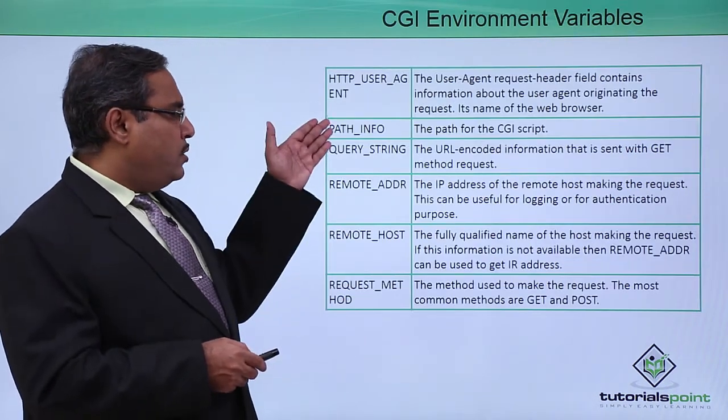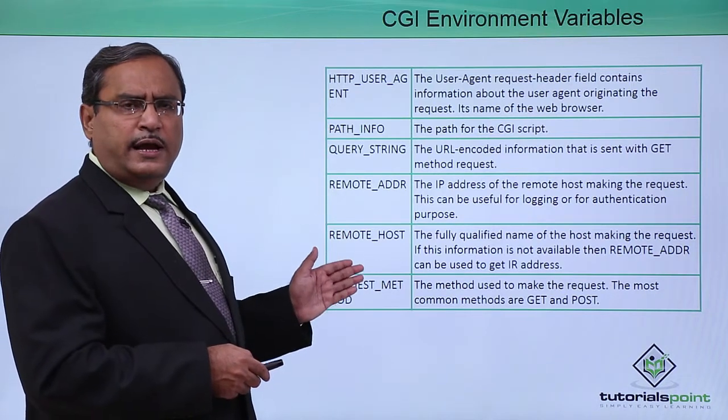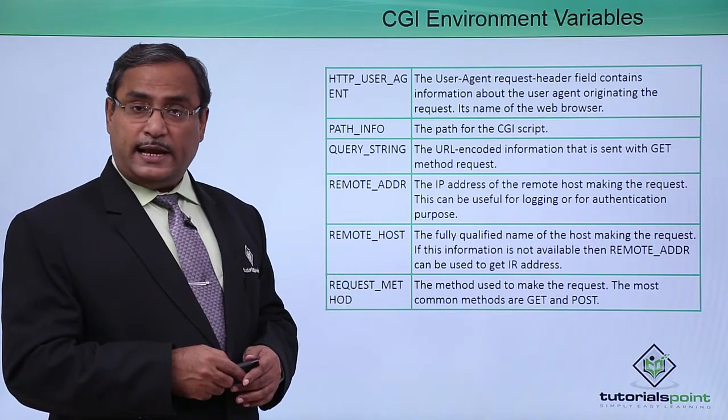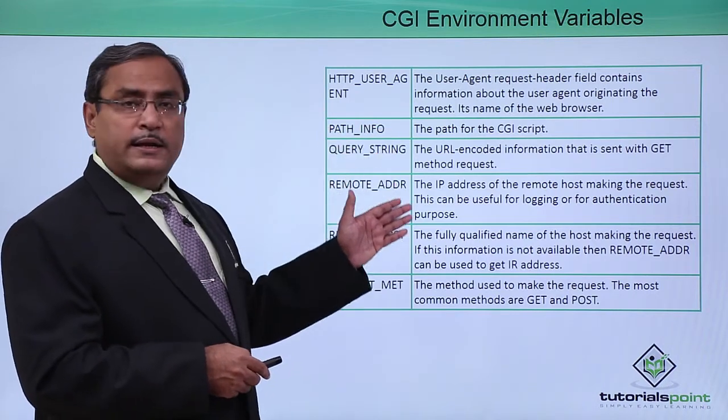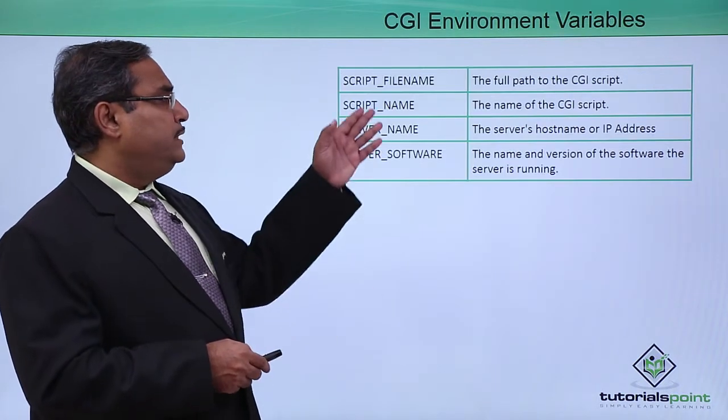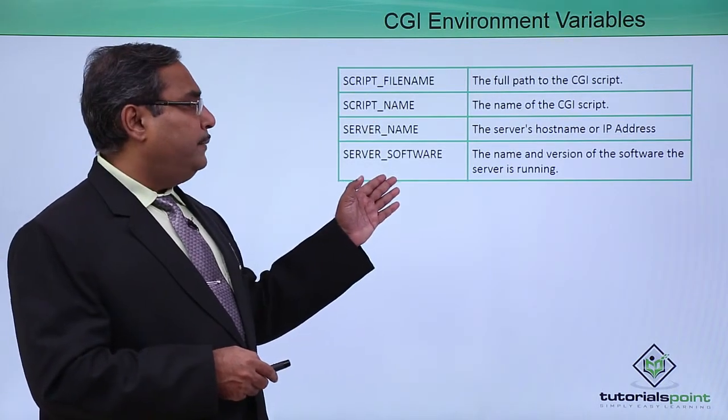In this way we have different sets of environment variables which a CGI script can access. Respective descriptions and meanings we have listed here. These are the other four of them we have listed.